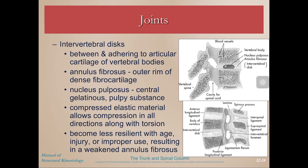The other place vertebrae articulate with each other is at the intervertebral discs, which are between and adhering to the articular cartilage of the vertebral bodies. The outer rim is called the annulus fibrosis — a dense, thick, fibrous outer protective covering. It surrounds the gelatinous nucleus pulposus, which is like a squishy shock absorber — like the air cushion in Nike Airs, or think of a jelly donut with squishy jelly on the inside. This compressed elastic material allows for compression and acts as your own shock absorber in the spine, helping to prevent damage to the vertebrae and the spinal cord during walking, running, and lifting.